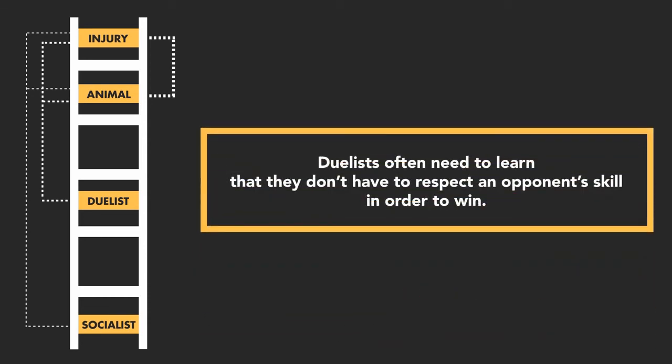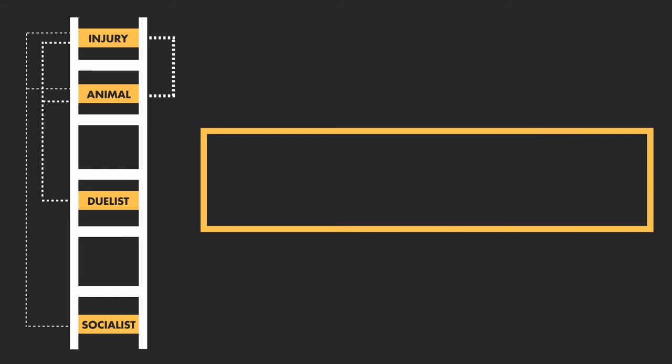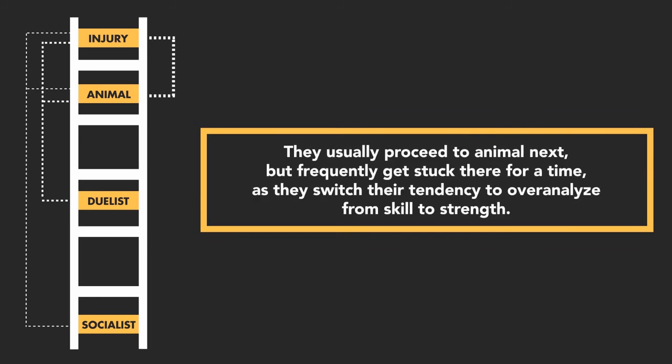Dualists often need to learn that they don't have to respect an opponent's skill in order to win. They usually proceed to Animal next, but frequently get stuck there for a time as they switch their tendency to overanalyze from skill to strength.